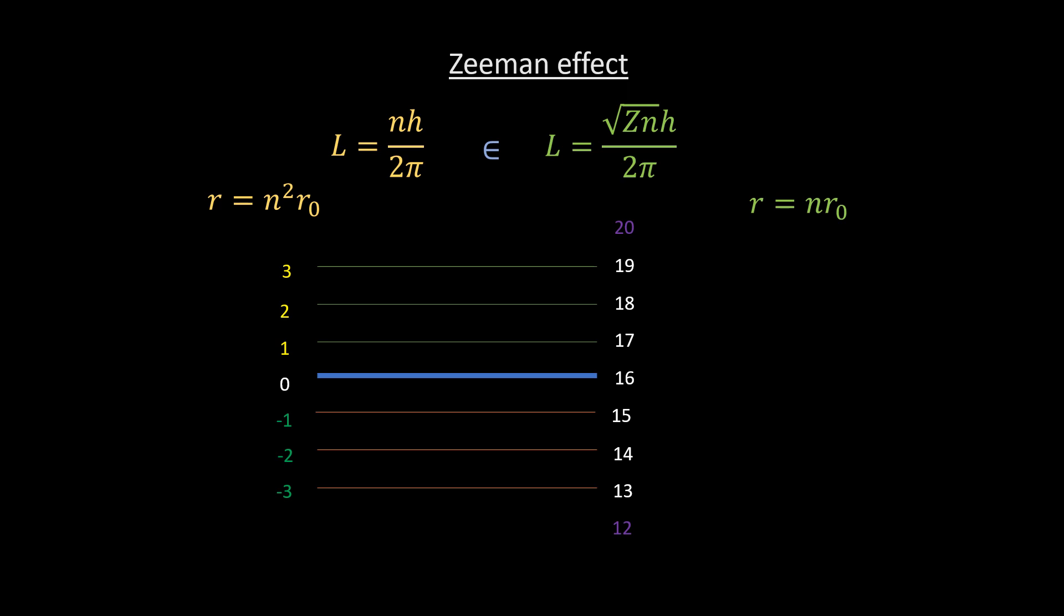Below we have 16 minus 1, which is equal to 15. 16 minus 2, which is equal to 14, and then 13. In the last video, we showed that these exact orbits are what we get directly by simply using my momentum equation, showing that all the known quantum numbers are redundant and are dispensable.